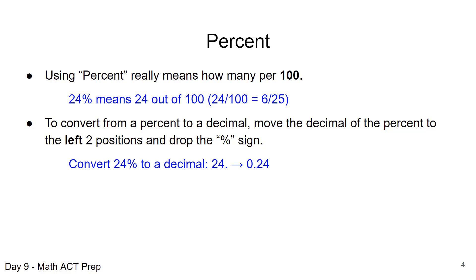So again if we're talking about our 24%, we're going to take that decimal point at the end of the 4, move it two places to the left and it becomes 0.24, a decimal, and that's really what we'll use in our calculations.